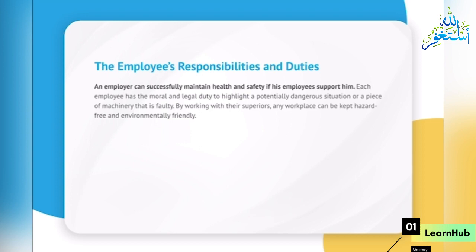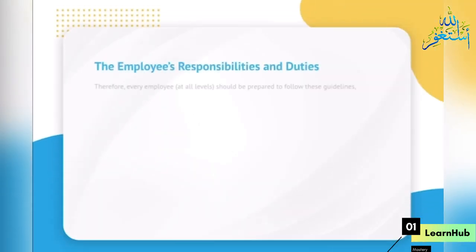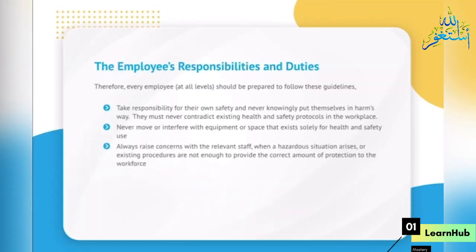The Employee's Responsibilities and Duties. An employer can successfully maintain health and safety if his employees support him. Each employee has the moral and legal duty to highlight a potentially dangerous situation or a piece of machinery that is faulty. By working with their superiors, any workplace can be kept hazard-free and environmentally friendly. Every employee, at all levels, should be prepared to: take responsibility for their own safety and never knowingly put themselves in harm's way; never contradict existing health and safety protocols in the workplace; never move or interfere with equipment or space that exists solely for health and safety use; and always raise concerns with relevant staff when a hazardous situation arises or existing procedures are not sufficient.